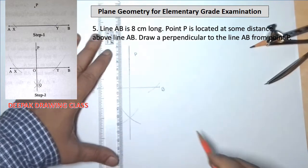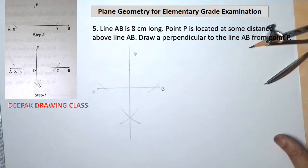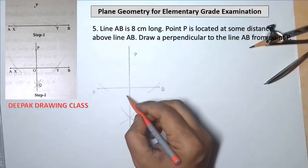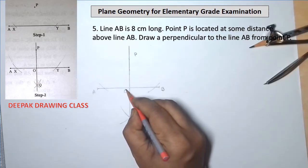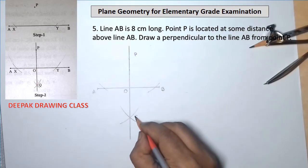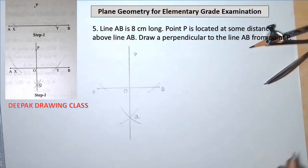And hence, PQ is the required perpendicular to the line AB. The construction is done. Thank you.